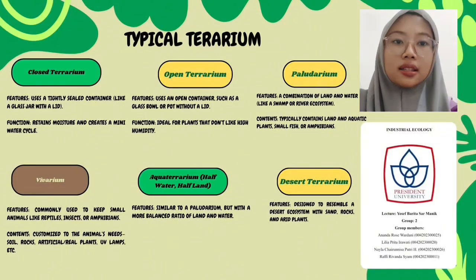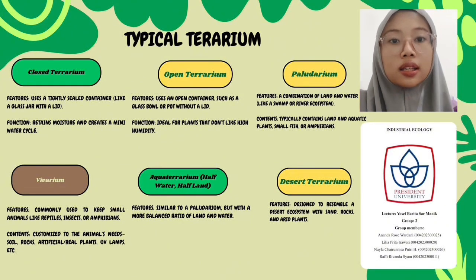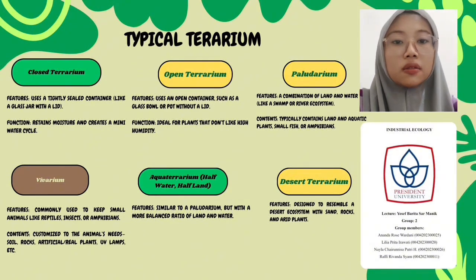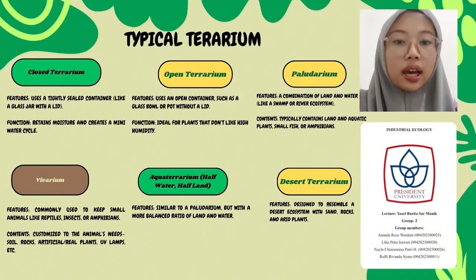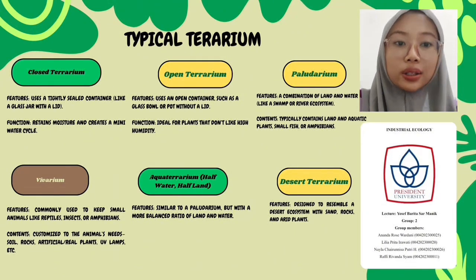Next are the types of terrariums. There are six types. The first is closed terrariums — they use a tightly sealed container like a glass jar with a lid, and retain moisture to create a mini water cycle. The second is open terrariums, which use an open container such as a glass bowl or pot without a lid, ideal for plants that don't like high humidity. The third is a paludarium, which combines land and water like a swamp or river ecosystem, and typically contains land and aquatic plants, small fish, or amphibians.